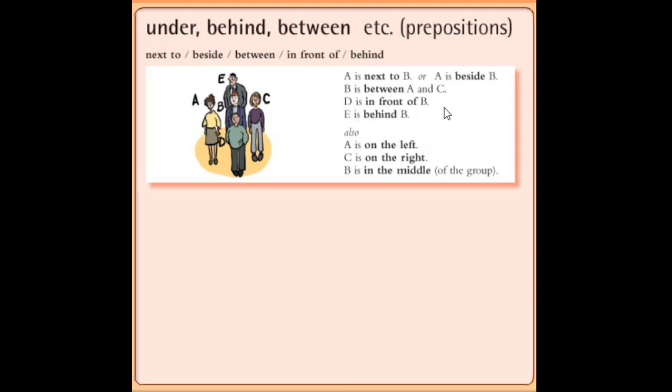D is in front of B. So D is in front of B, meaning D is facing B. And E is behind B. So E is behind B. We can also say that E is on the left side, and C is on the right. B is in the middle. Middle means in the middle of the group. So these are some prepositions showing the positions.